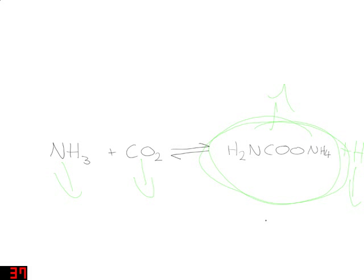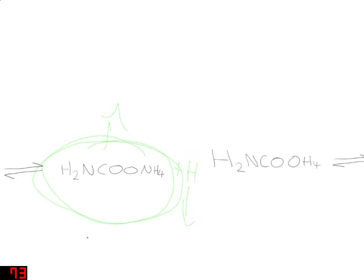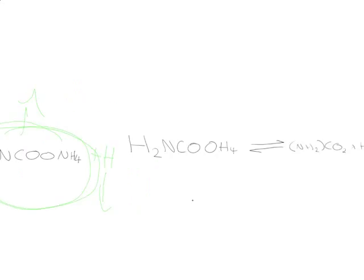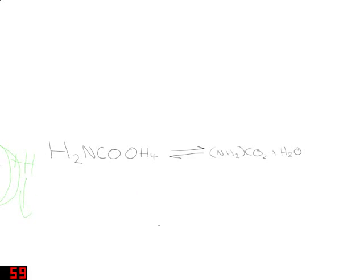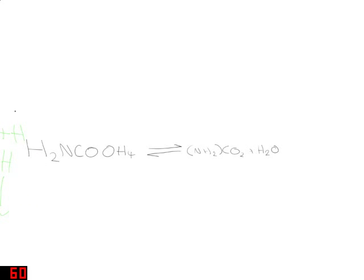The next equilibrium is the decomposition of the ammonium carbonate into urea and water. This process is endothermic. So, that means that the heat is on this side. This means that you want to heat it up as much as you can. Because, the more you heat it up, the more of this will get used up, meaning the more of your precious urea will be produced.